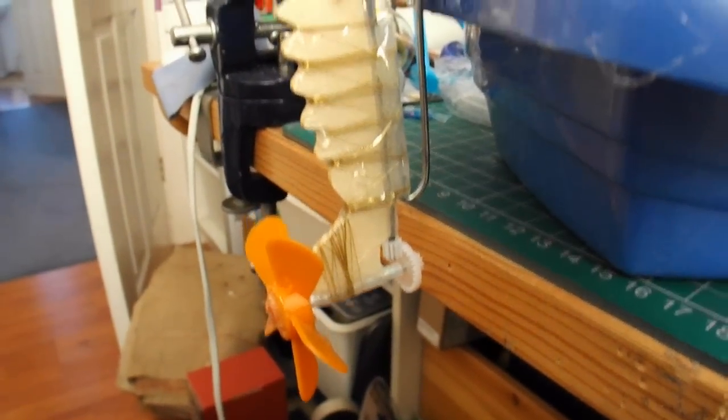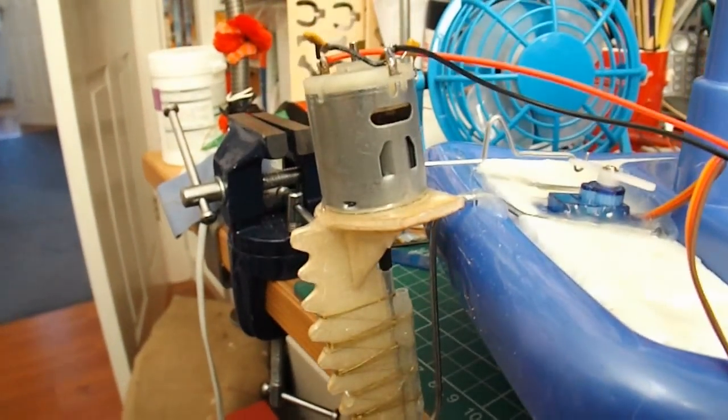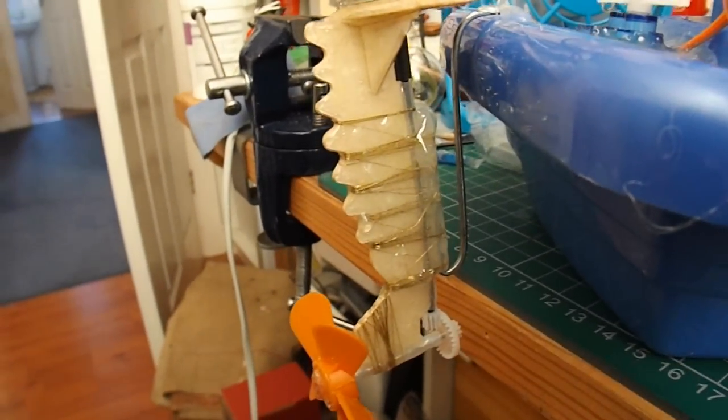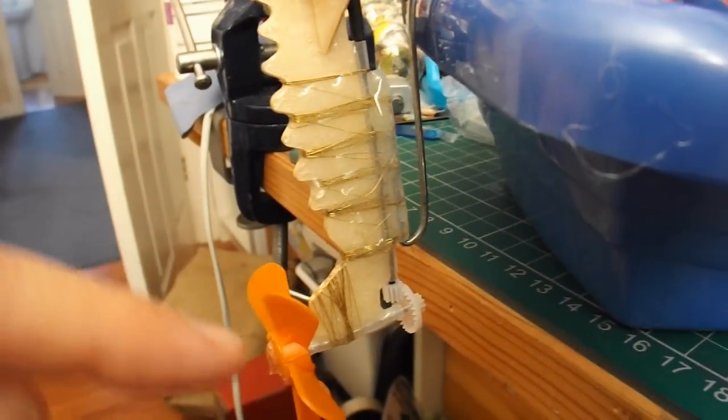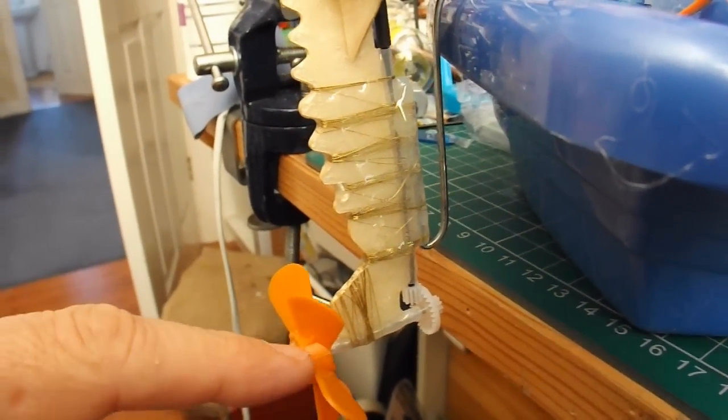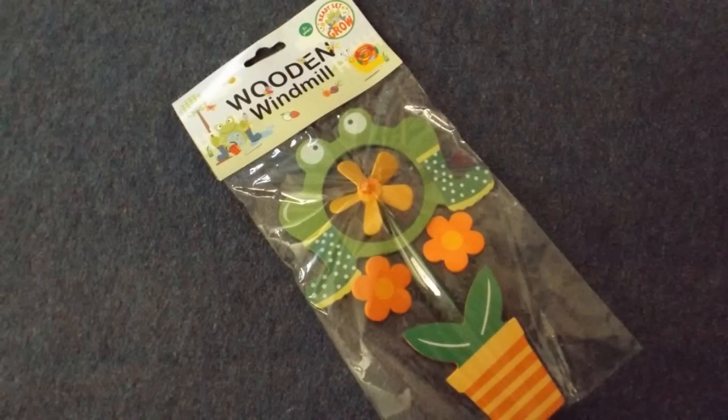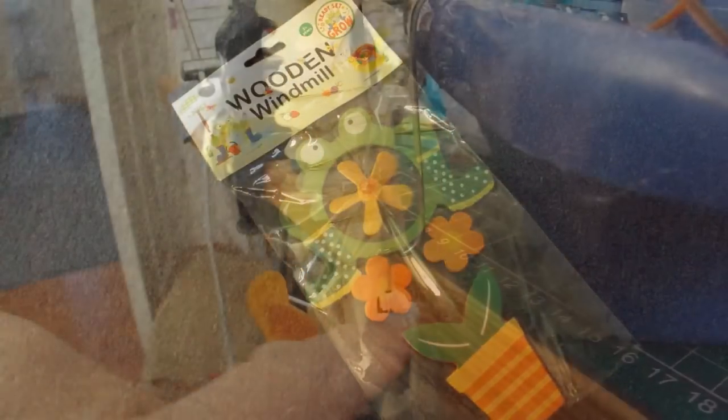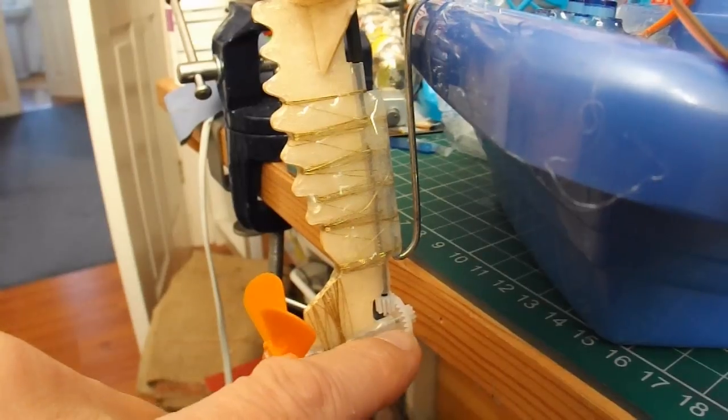Just thought I'd do a close up to show what we've got here. So we've got the propeller that comes from a garden ornament, on a shaft with a crown gear on it.